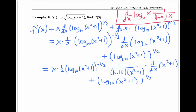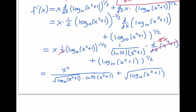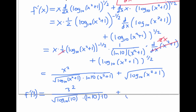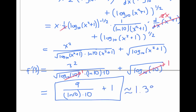The derivative of x² + 1 is just 2x. Writing that down and simplifying, I get an expression where the x² in the numerator comes from the two x factors, the square root of log in the denominator comes from log to the negative one-half power, and the ln(10) times (x² + 1) comes from the chain rule term. When I evaluate at x equals 3, I get 3² over the square root of log base 10 of 10, times ln(10) times 10, plus the square root of log base 10 of 10. Since log base 10 of 10 equals one, I'm left with nine over ln(10) times 10 plus one, which amounts to about 1.39.